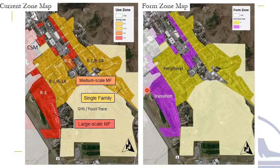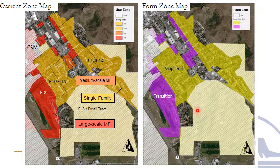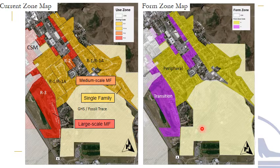The new code recognizes that there are different development patterns within R1 through R3 and introduces a revised list of development standards that scale back the overall size of structures to better match the built environment. If you look at the map on the right side of the screen, you'll see different areas called form zones, represented by different colors.